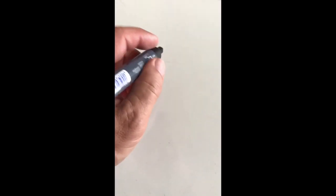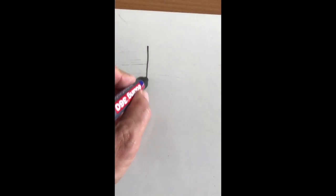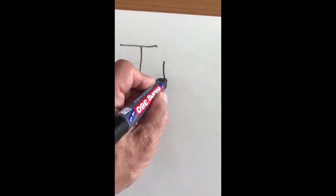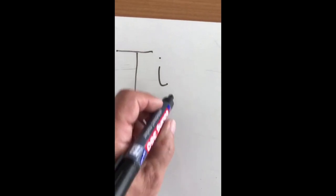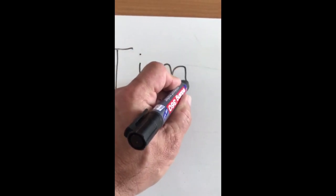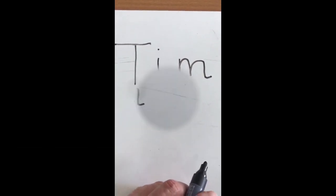Let's see if we can help Tim. I'm going to start by writing Tim's name. Tim's name has three sounds: T, I, M. Tim.